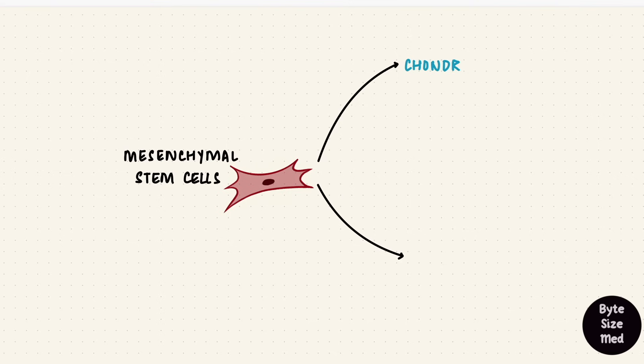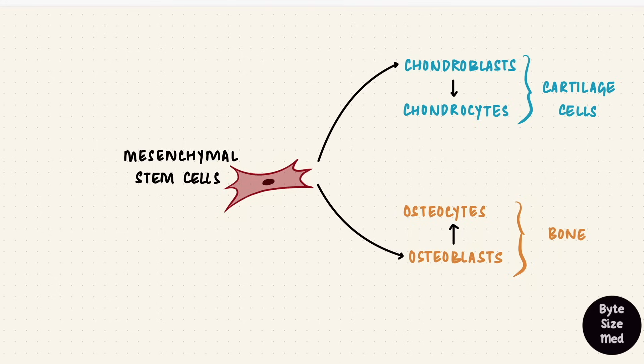Like chondroblasts, which can form chondrocytes, and these are cartilage cells. Osteoblasts can form osteocytes, and these are bone cells.